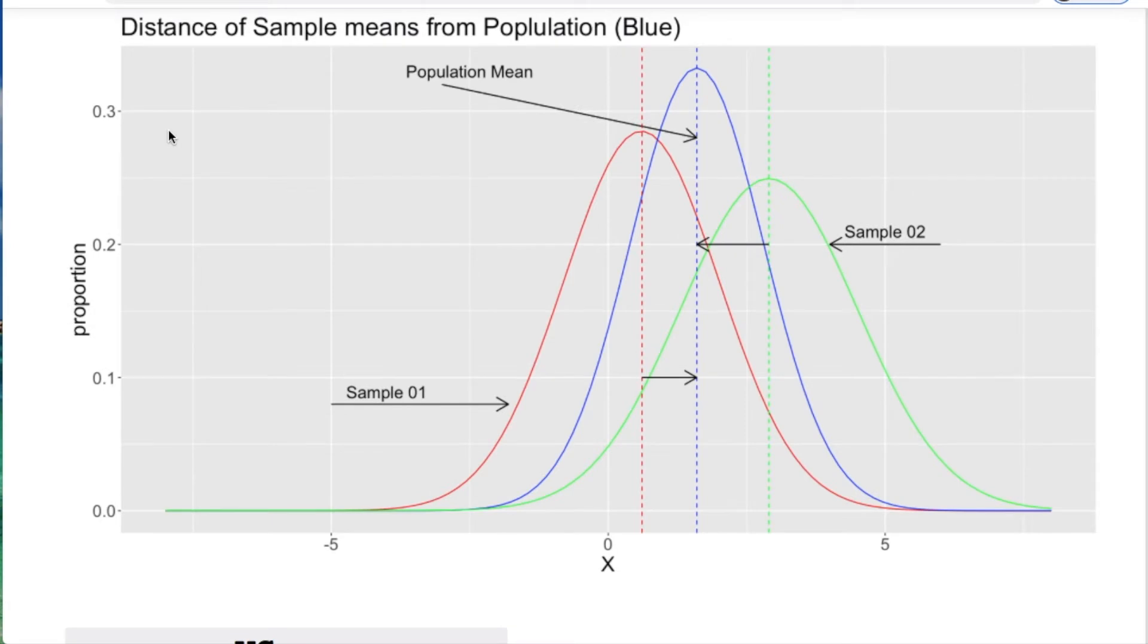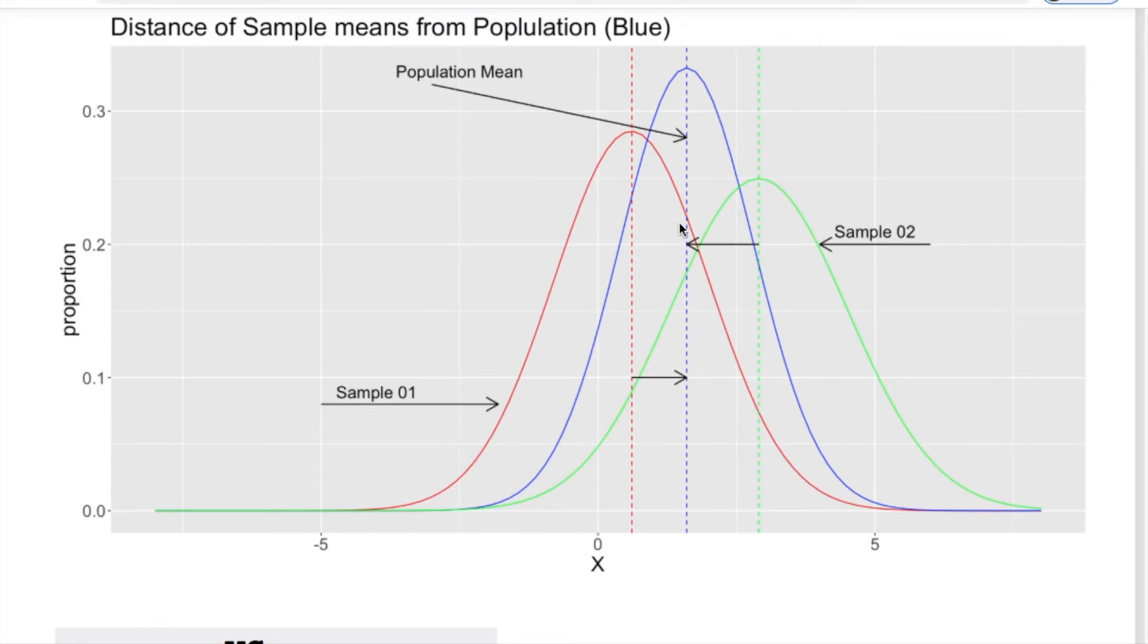So this is the same thing just expanded. Assume that this blue one was our population mean. Notice the vertical lines blue, red, and green. The distance from the red mean to the blue mean, the distance from the green mean to the blue mean are sample one and sample two. And we're trying to relate this to the population.